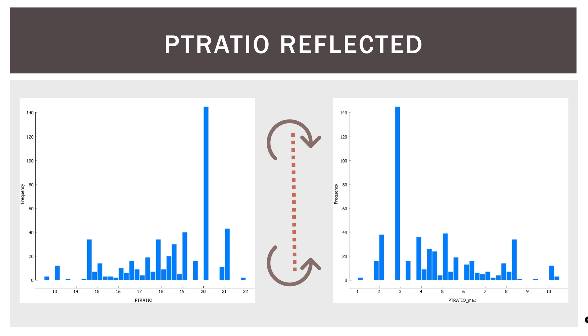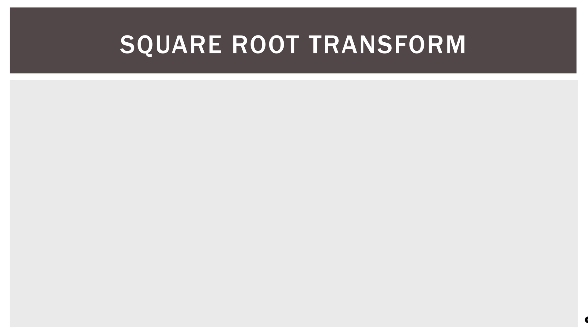So the maximum value here was about 22. We added one to that. So 23 and then subtracted each value from that. So now we can see that the maximum of 22 is now a minimum of one. And then from there, we can continue the process with a square root transformation.